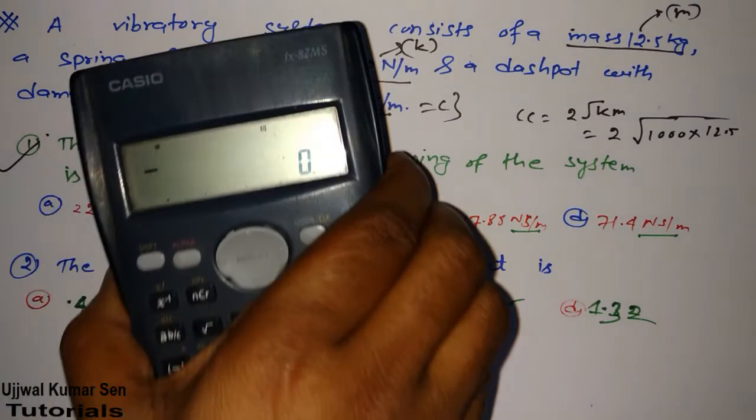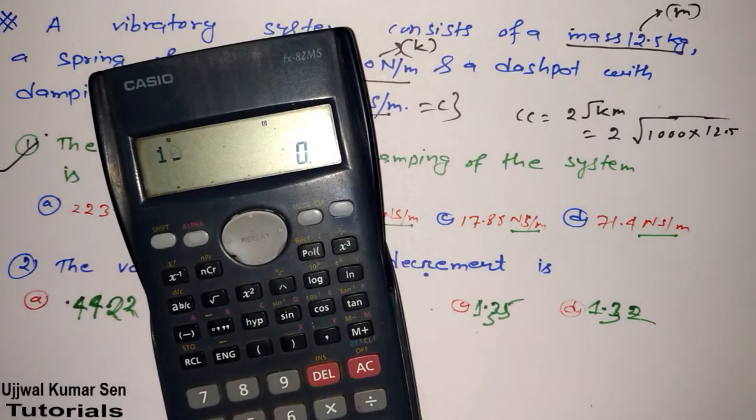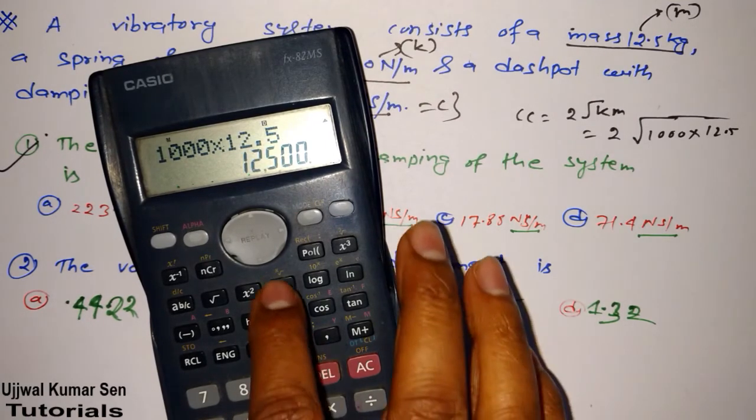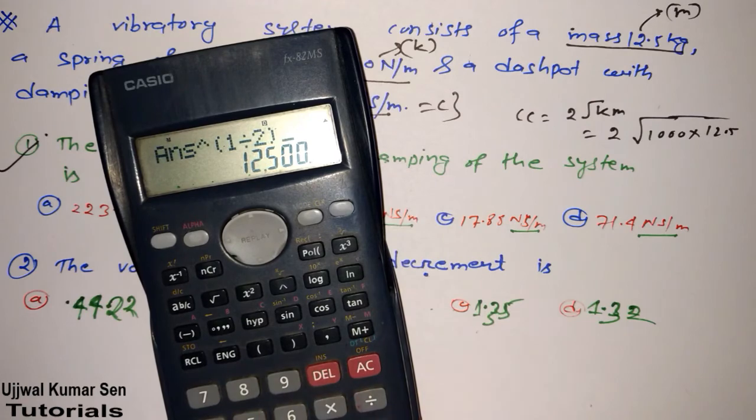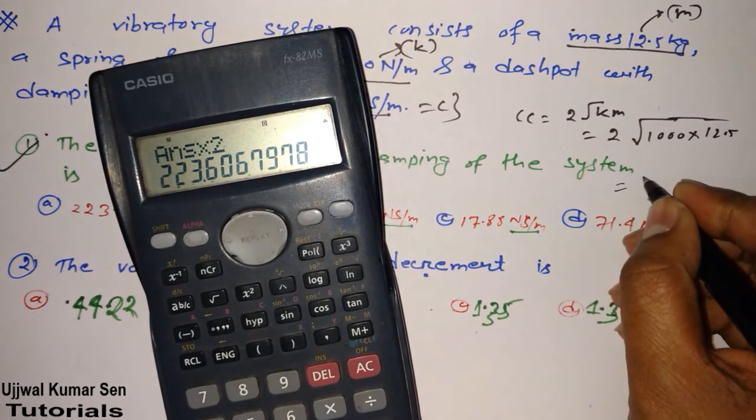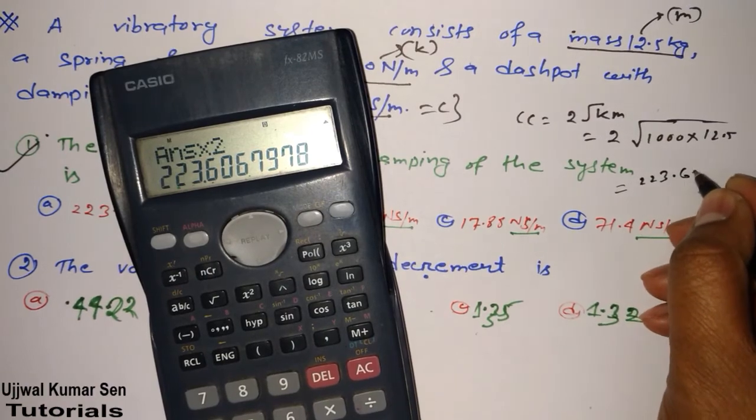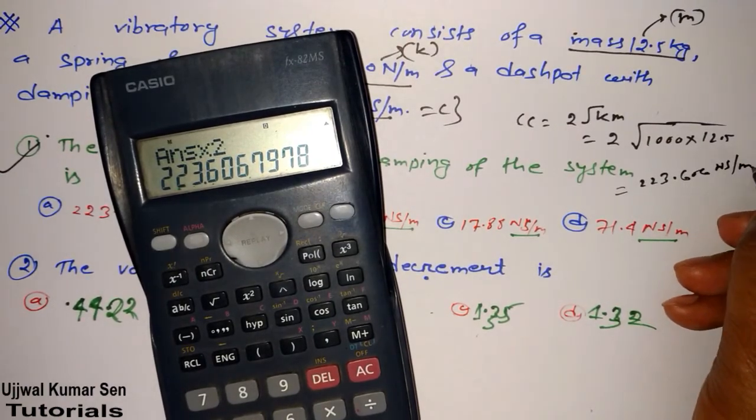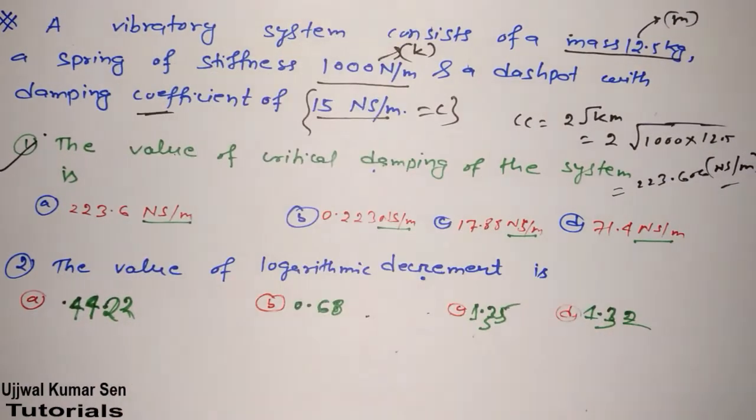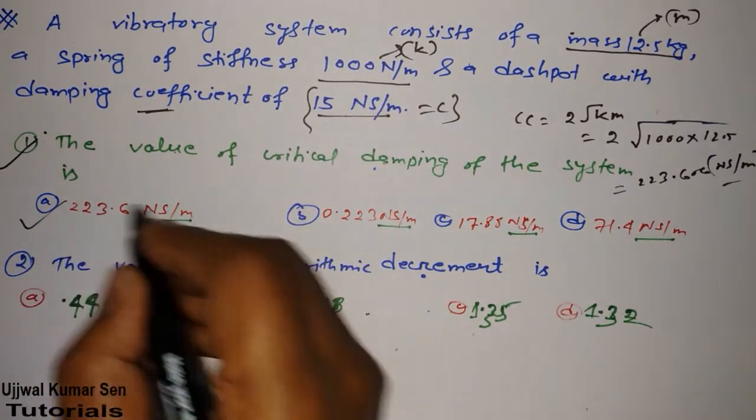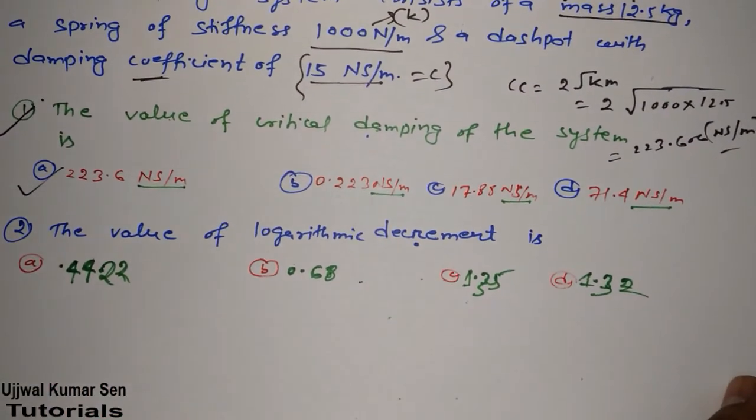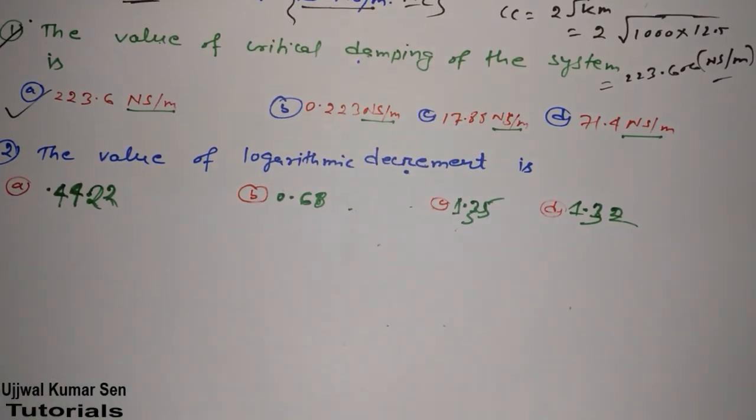Calculator. So K, 1000, 12.5. Yeah, we got this one. We have to find out its root. We have got this one, multiple 2. So the value we are getting is 223.606 Ns per meter. So can you tell which one is the right answer? Yes. Option A is the right answer for this question, right? Now, let's move to the next question.